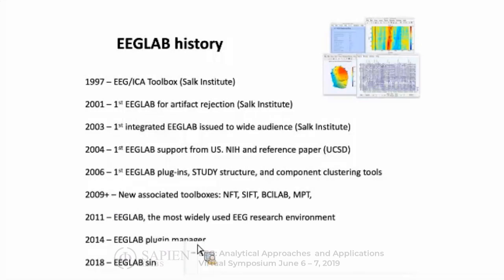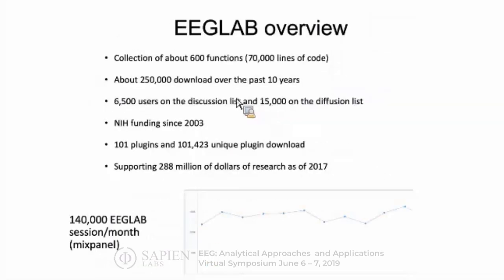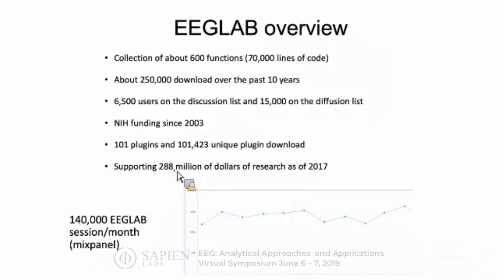There are about 600 functions in EEG Lab and about 70,000 lines of code. We've had about 250,000 downloads over the past 10 years. There are 6,500 users on the discussion list and 15,000 users on the diffusion list. We've had NIH funding since 2003. There are about 101 plugins right now, and all the plugins have been downloaded more than 100,000 times. EEG Lab is supporting $288 million of research at NIH, and there are about 140,000 EEG Lab sessions started per month.